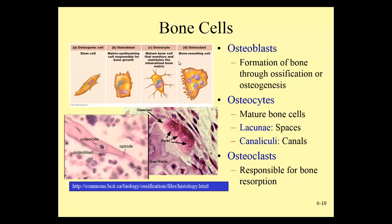Osteocytes, once bone is formed, simply maintain and monitor the bone tissue. They will send signals if there is extra stress or weakness in a bone, and that will affect the bone's ability to rebuild or break down. So osteocytes can send information to osteoblasts or osteoclasts to break down or build bone, depending on what the needs of the bone are.